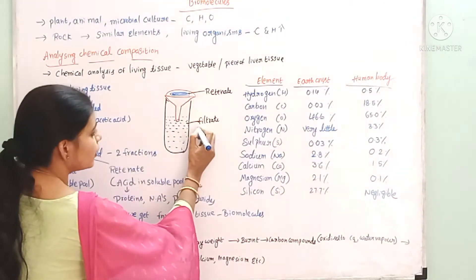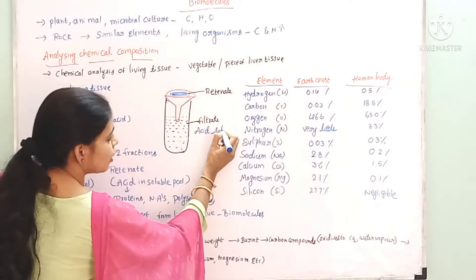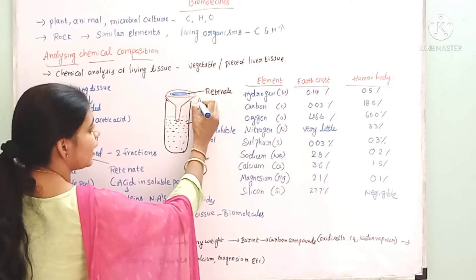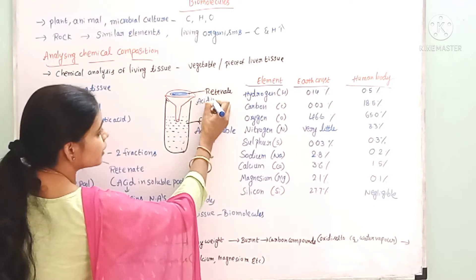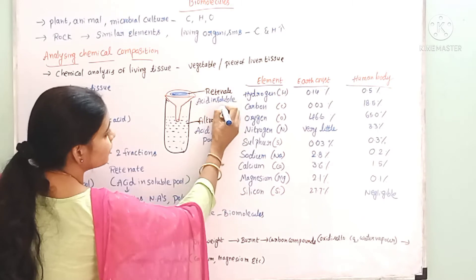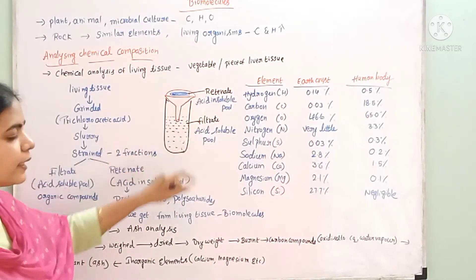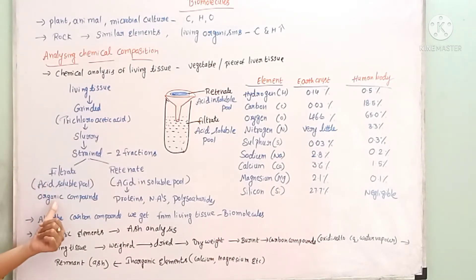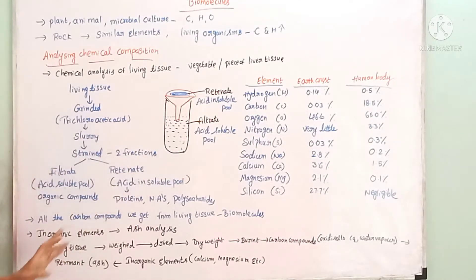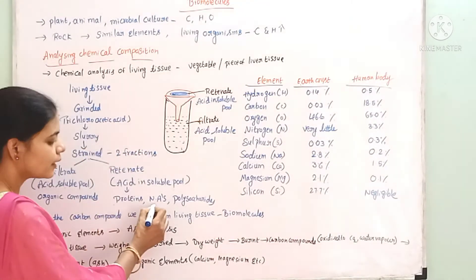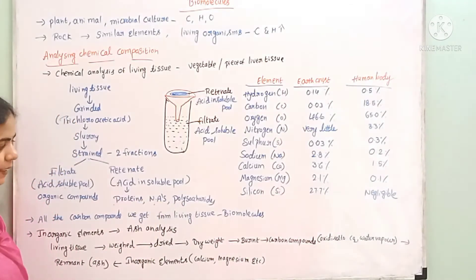The filtrate is called the acid-soluble pool, whereas the retentate is called the acid-insoluble pool. The filtrate is the acid-soluble pool, and we use organic compounds within it. The acid-insoluble pool contains proteins, nucleic acids, and polysaccharides.